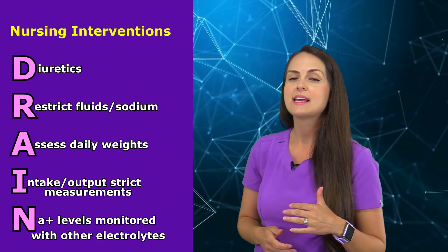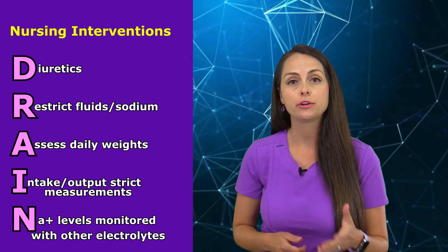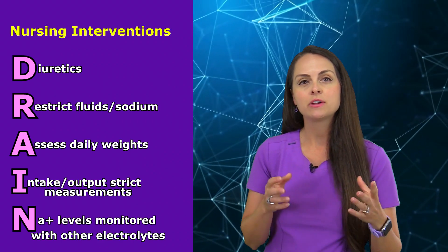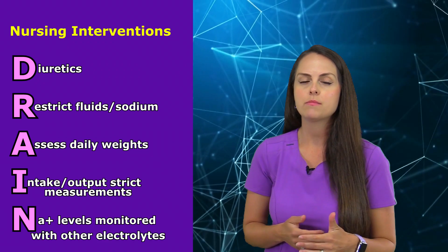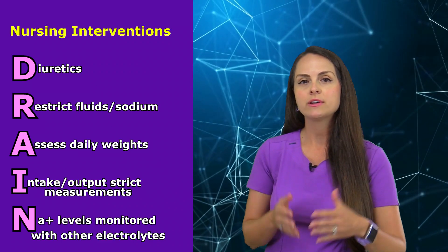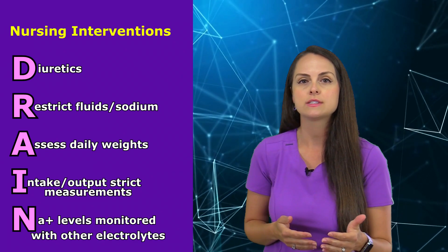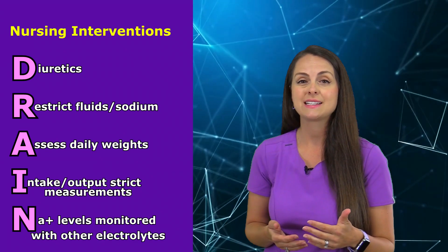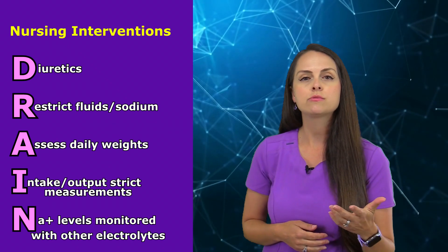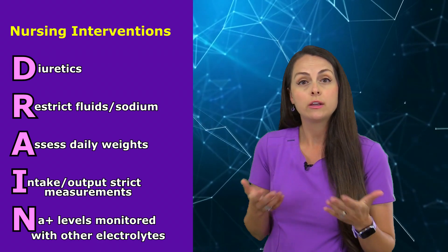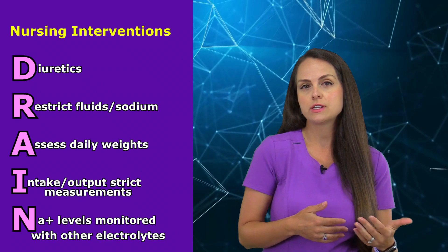A is for assess daily weight. Assessing a patient's weight is a great way to monitor their fluid status. Do it at the same time every day with the same scale for the most accurate results, and watch how weights are trending. We don't want the patient gaining more than 2 to 3 pounds in a 24-hour period — that tells us what we're doing is not working. Remember: one kilogram, which is 2.2 pounds, equals one liter of fluid. Also routinely check their edema — is it decreasing?